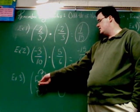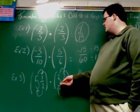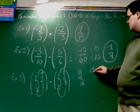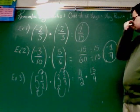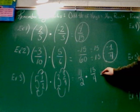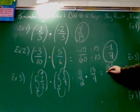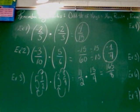So two times five is 10, plus one is 11, it stays over two. Four times three is 12, plus three is 15, it stays over four, times sign between. Now we can go straight into multiplying. Eleven times 15 is 165, two times four is eight. That is irreducible, so you can leave it 165 over eight.